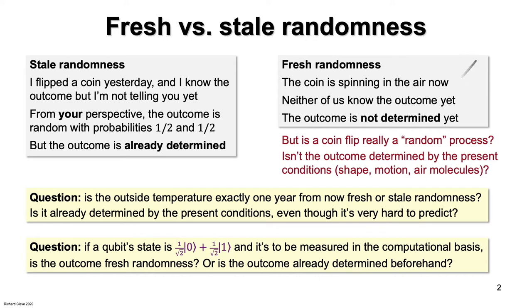In the quantum information framework that has been the subject of this course, we've thought of it as fresh randomness. It doesn't really make sense in our model for Alice to produce a plus state and at the same time to know in advance the outcome of a future measurement of that state. Or does it?